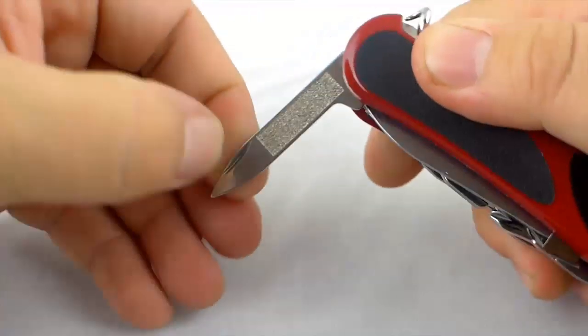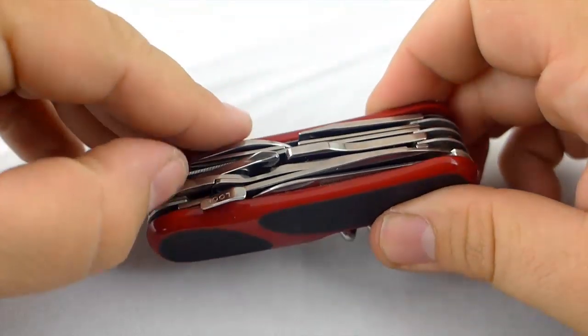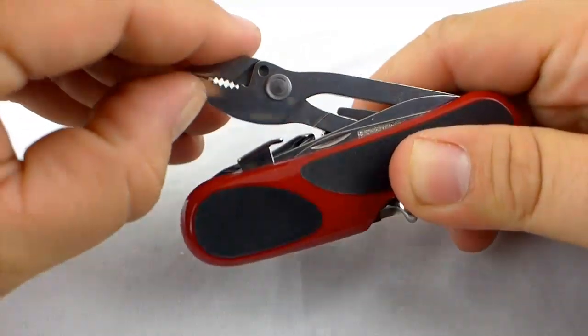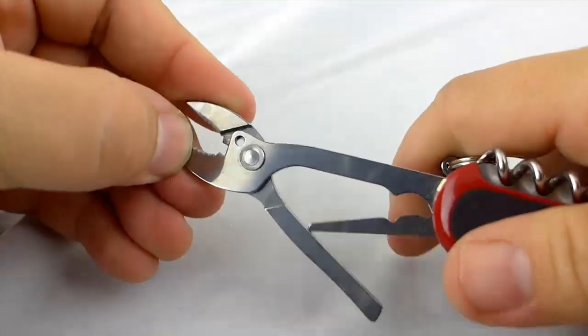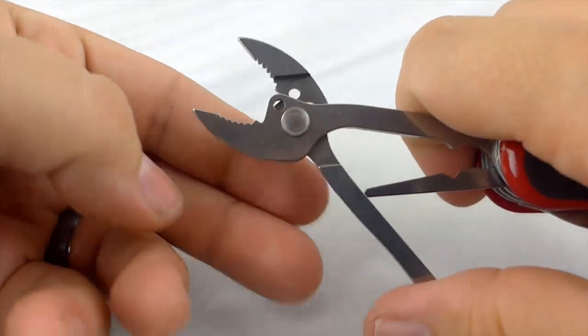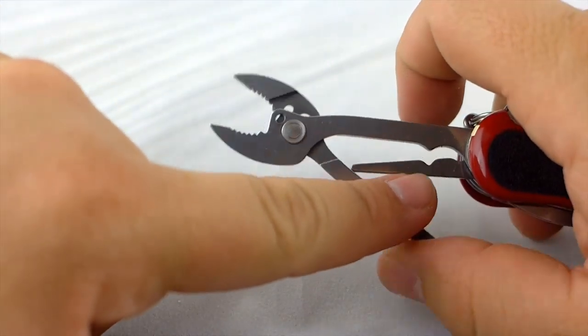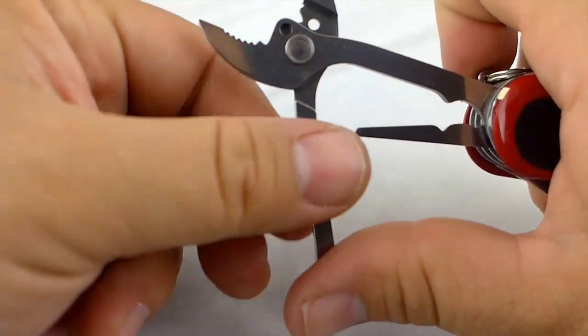Instead of a small blade it has a nail file here. And you've got your adjustable pliers and wire strippers. They can adjust out. You've got a spring here that's different than what the Victorinox Swiss Army knives use.